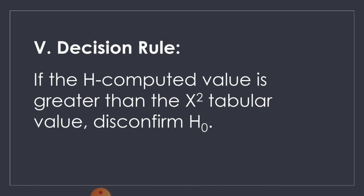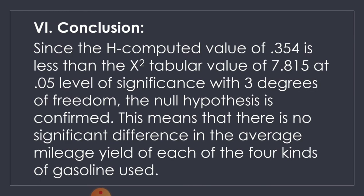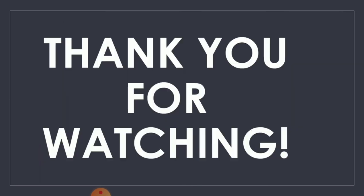For the decision rule: if the H computed value is greater than the chi tabular value, we reject the null hypothesis. For the conclusion: since the H computed value of 0.354 is less than the chi tabular value of 7.815 at the 0.05 level of significance with 3 degrees of freedom, the null hypothesis is confirmed. This means there is no significant difference in the average mileage yield of each of the four kinds of gasoline used. That is the Kruskal-Wallis test, or H-Test. Thank you for watching.